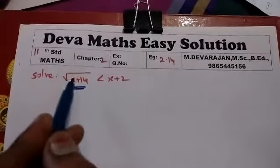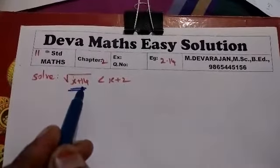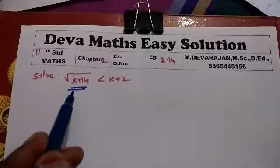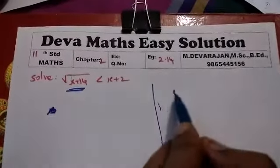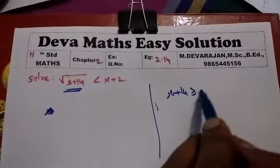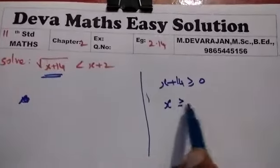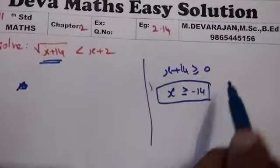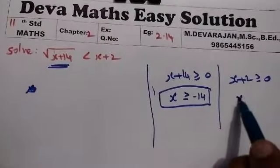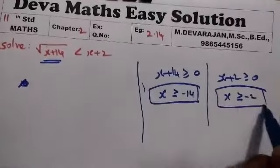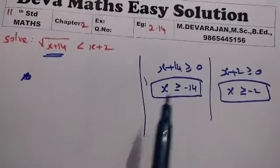For the root value to be defined, it must be greater than or equal to 0. So x plus 14 greater or equal to 0, which means x greater or equal to minus 14. Next, x plus 2 also greater than or equal 0, so x greater than or equal minus 2.